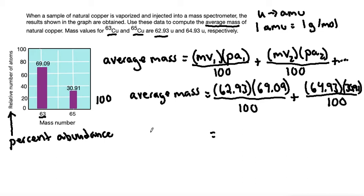From here I'm going to simplify. The average mass, I'll grab my calculator to do 62.93 times 69.09 divided by 100 plus 64.93 times 30.91 divided by 100 equals, and I get that to be 63.5482.